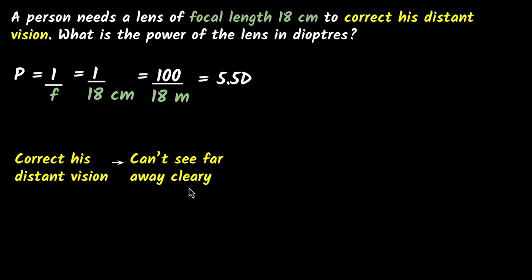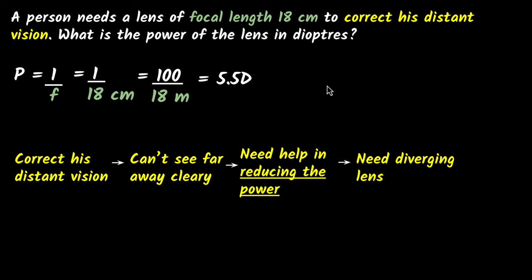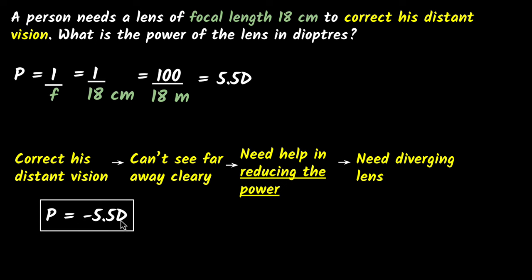If you can't see things far away, it means your eyes are unable to relax. Your eyes require minimum power to see far away, so your eyes are unable to reduce the power. Therefore, your eyes need some help in reducing the power. You add a diverging lens. So the way to correct distant vision is by adding a diverging lens, and the power of the lens is negative 5.5 diopters, because for a diverging lens the power is always negative. For a converging lens, the power is always positive.